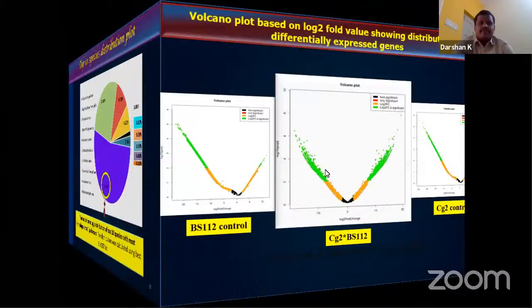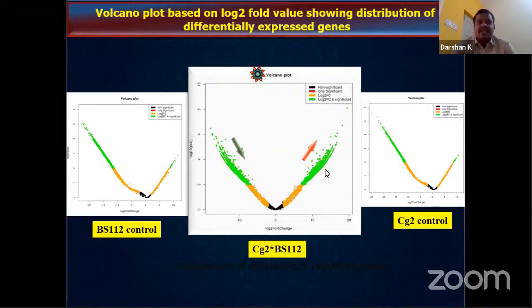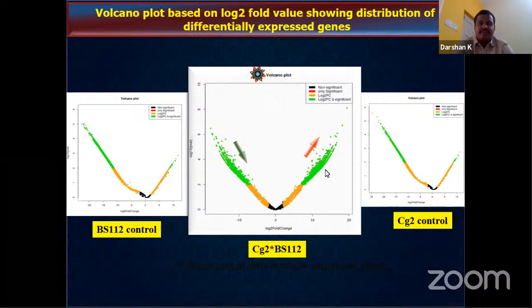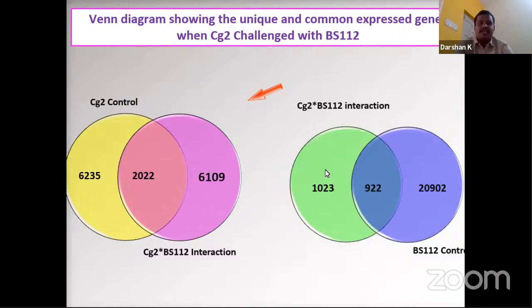A volcano plot was constructed to show the differential distribution of differentially expressed genes based on log2 fold change. There is significant differential gene expression in the interaction compared to the control. A Venn diagram showed that 2,022 genes are common between control and interaction, while 6,199 genes are expressed only in the interaction.